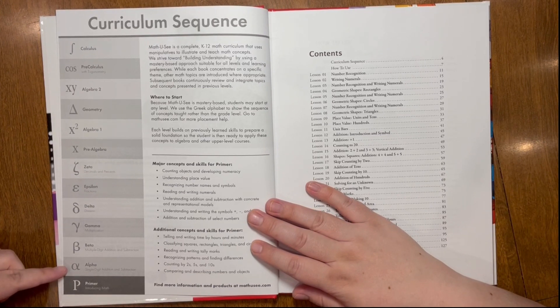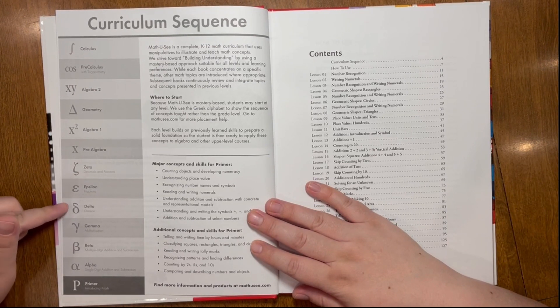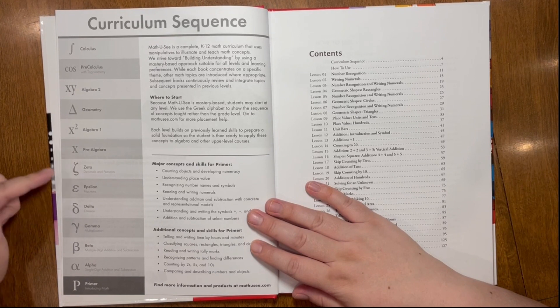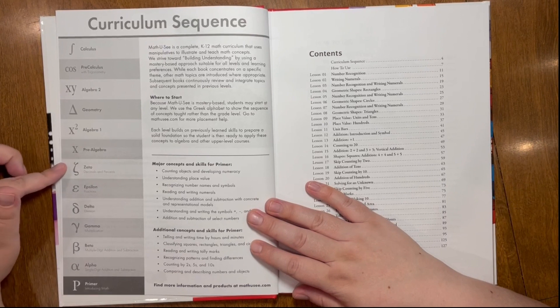If you open up the book, the first thing that you're going to see over here is their curriculum sequence. You can see that this is their primer book, which is essentially their kindergarten level. This is their basic introduction to math. After this, we're going to move on, should this be successful for us as it has been so far, to alpha, beta, gamma, delta, epsilon, zeta. And this would cover essentially grades one through six.